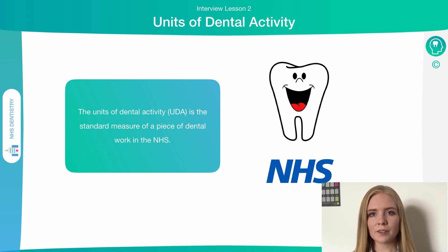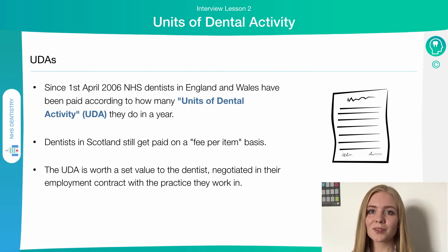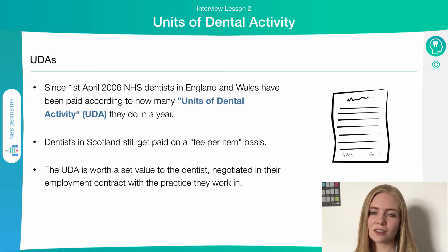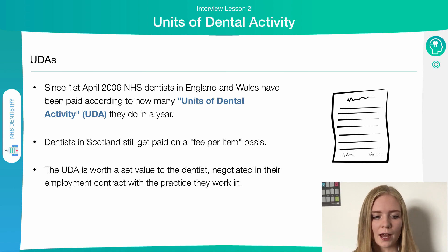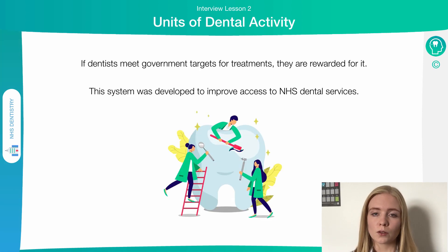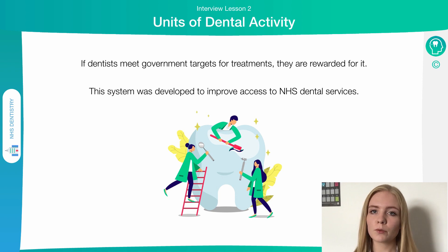Each form of dental treatment, be it a filling or a crown, for example, is measured in a different number of UDAs. Since this contract was released in 2006, England and Wales have been paid based on the number of UDAs that they complete each year. In Scotland, it's slightly different — they're still paid by the number of items of treatment they provide. The UDAs are of value to the dentist; for each one they complete, they get paid a certain fee. When a dentist meets their target of UDAs to complete, they get paid and rewarded for it.